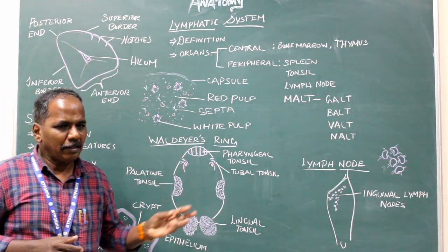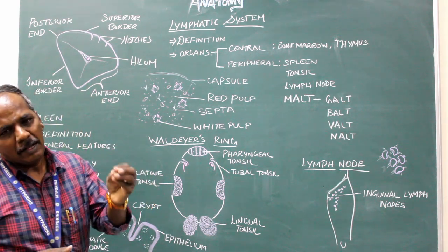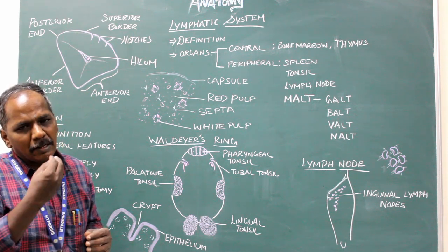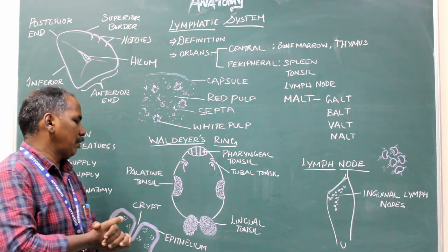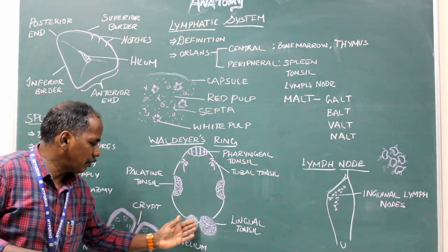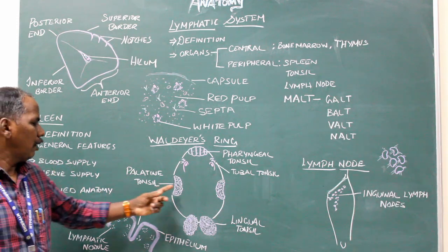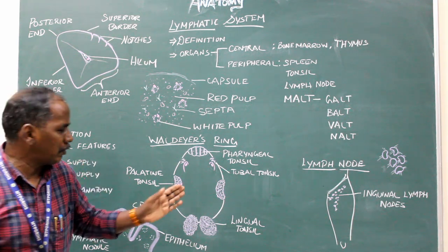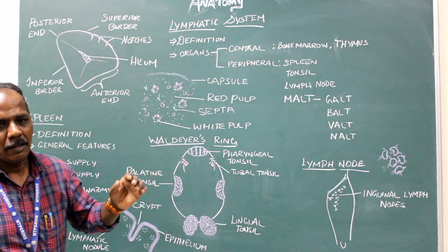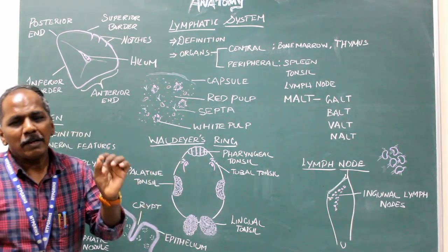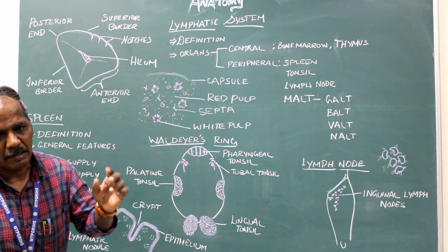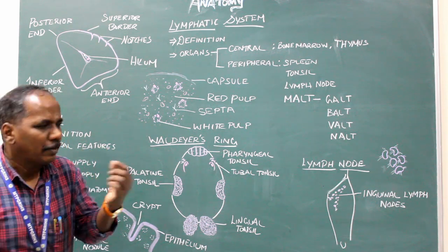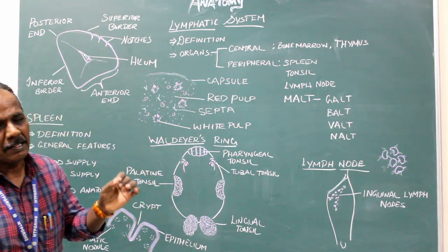The tonsils are situated around the aerodigestive tube. The lingual tonsil is situated in the posterior part of the tongue. The palatine tonsil is situated in the oropharynx, between the palatoglossal arch and the palatopharyngeal arch. The tubal tonsil is situated near the opening of the auditory tube in the nasopharynx, as the auditory tube connects the middle ear with the nasopharynx.